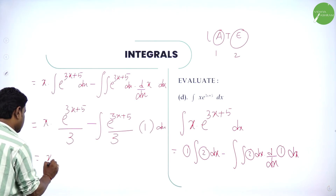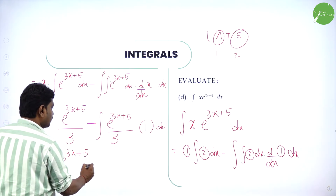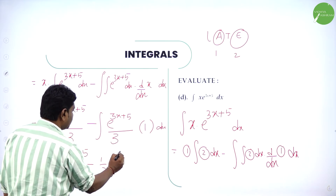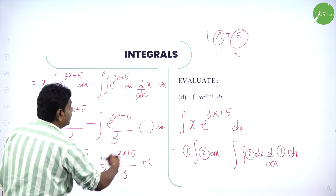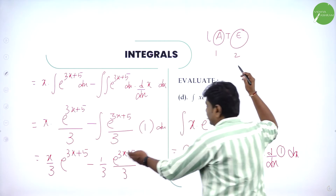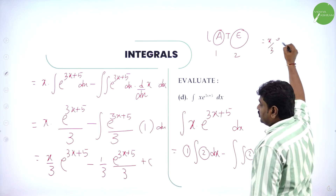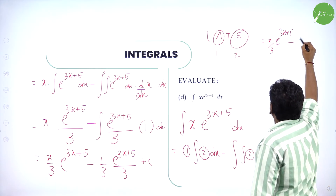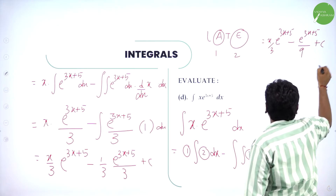So: x/3·e^(3x+5) minus (1/3)·integration of e^(3x+5) dx. Integrating again gives e^(3x+5)/3. So: x/3·e^(3x+5) minus (1/3)·(e^(3x+5)/3) plus c. The final answer is x/3·e^(3x+5) minus e^(3x+5)/9 plus c.